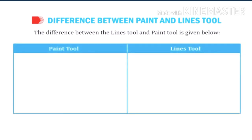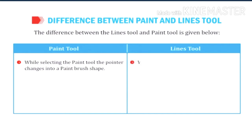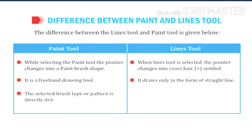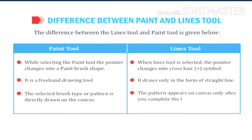First we will talk about the paint tool. While selecting the paint tool, the pointer changes into a paint brush shape. In the line tool, when it is selected, the pointer changes into a crosshair symbol. The paint tool is a freehand drawing tool, whereas the line tool draws only in the form of strict lines. The selected brush type or pattern is directly drawn on the canvas, and the pattern appears on the canvas only after you complete the line and release the mouse button.